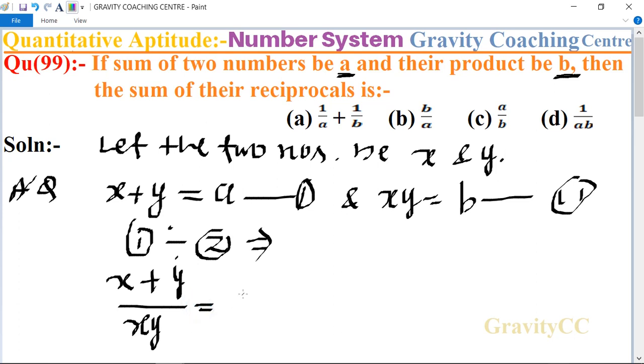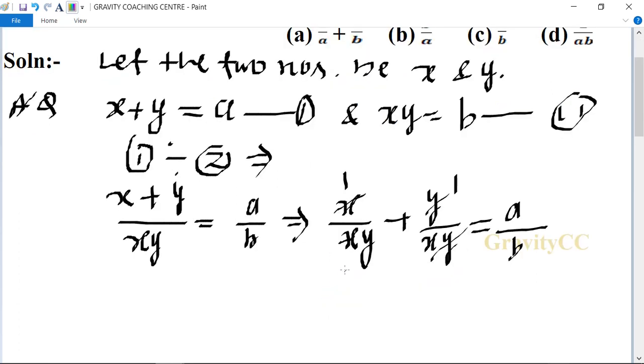a/b. That implies x/(xy) + y/(xy) = a/b. So y and y cancel, x and x cancel. Therefore, 1/x + 1/y equals...